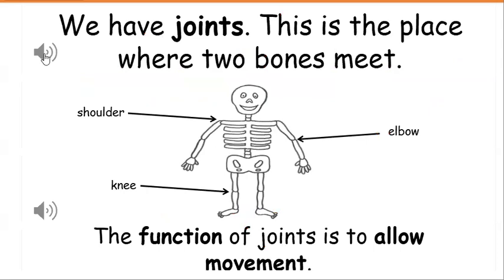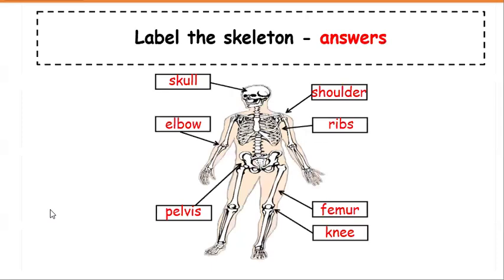We have joints. A joint is the place where two bones meet. The function of joints is to allow movement.